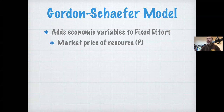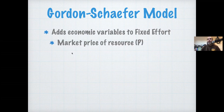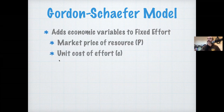The first thing we're going to add is a market price for the resource we're harvesting. Using the example of the Massachusetts cod fishery, this would be the price of cod per unit — say per ton or per pound. You're going to harvest some amount of cod and this is the market price for that cod.